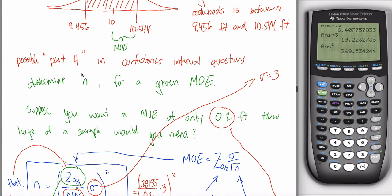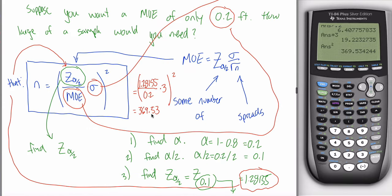Technically, this is asking you to determine n, the sample size, and you can't have 369.53 trees, so we say 370. You always round up to the nearest whole number — not normal rounding. If the answer were 369.13, you'd think 369, but it's 370. With margin of error problems, always round up. On homework, the system is picky, so make sure you round up to get it marked correct.